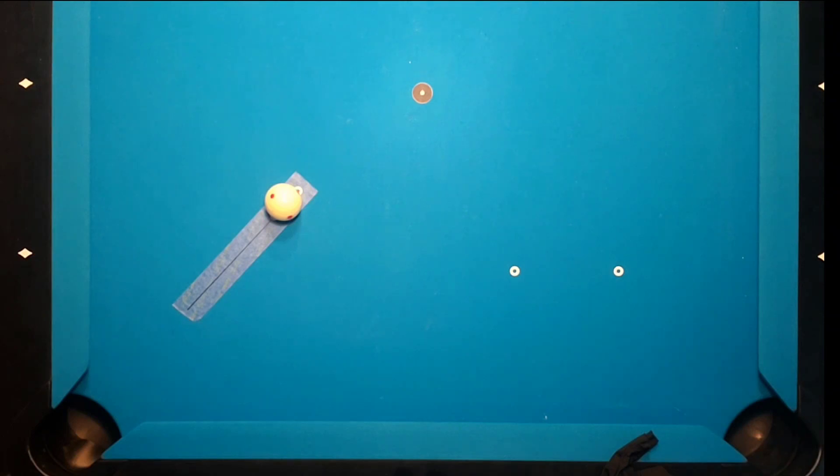If you find yourself consistently over cutting the ball, like the shot in the video, then the dots on your aiming aid are too far apart. While if you're under cutting the ball, like this shot in the video, then the dots on your aiming aid are too close together.